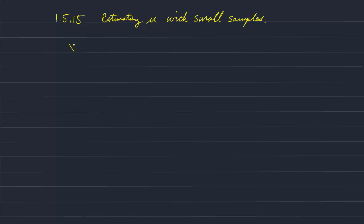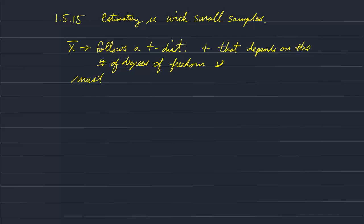That is, x bar won't follow a normal distribution, it follows a t distribution. And that depends on the number of degrees of freedom. We'll refer to the number of degrees of freedom as nu, the Greek letter nu. And we'll define what that is shortly. So before, when we had large samples, we could use the normal distribution for x bar for any population.